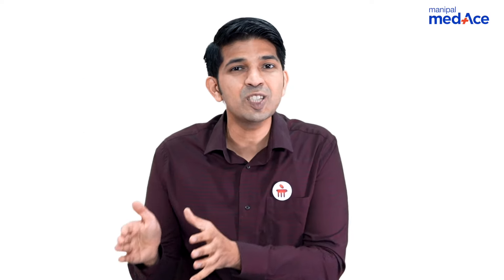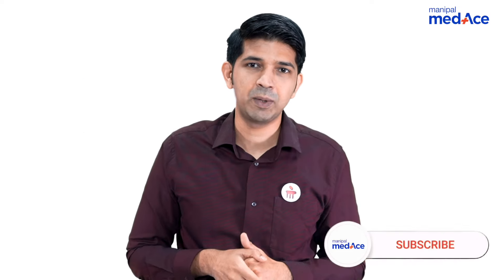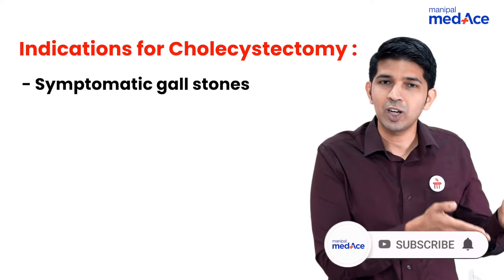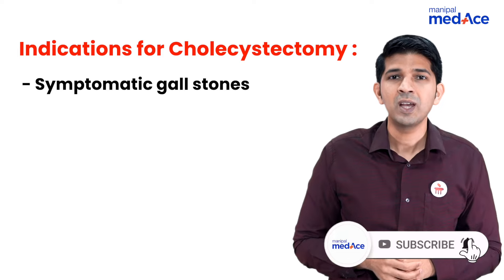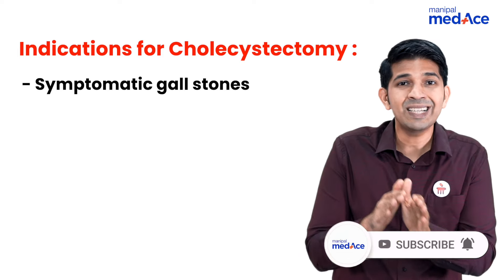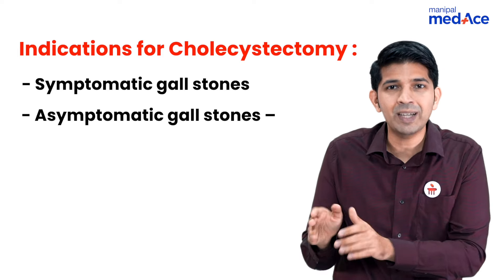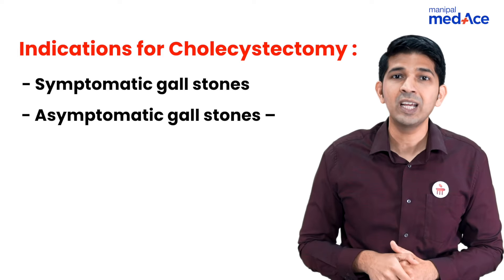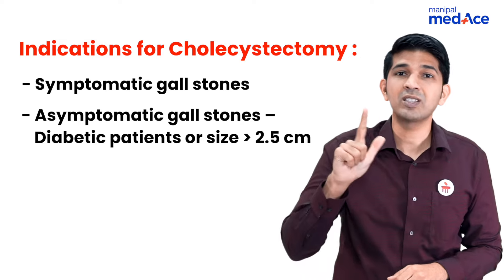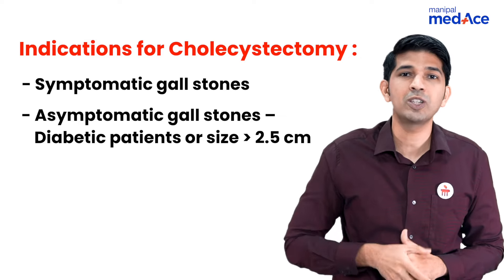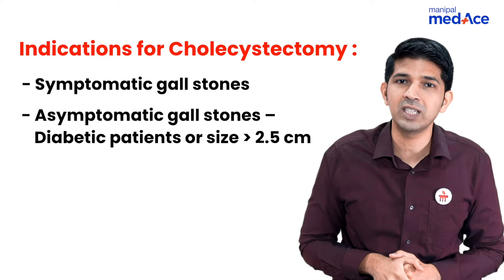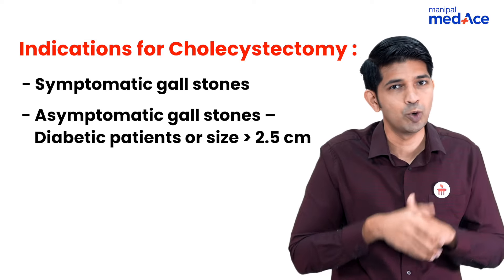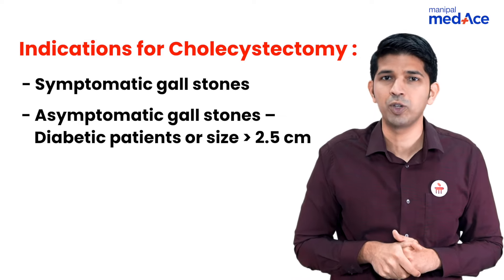What are the indications for cholecystectomy? If the patient is having symptomatic gallstones, they undergo surgery. If the patient is asymptomatic and the stones are picked up incidentally, surgery is also indicated if the patient is diabetic or the size of the stone is more than two and a half to three centimeters.